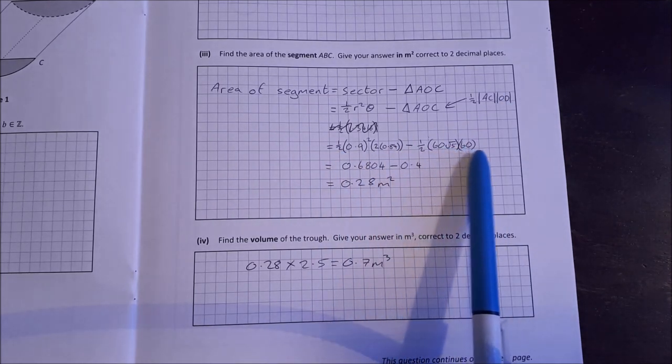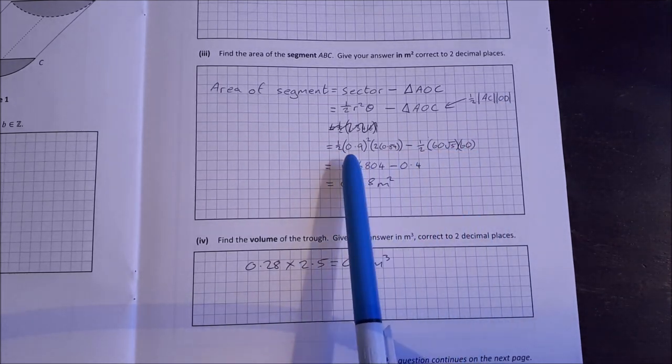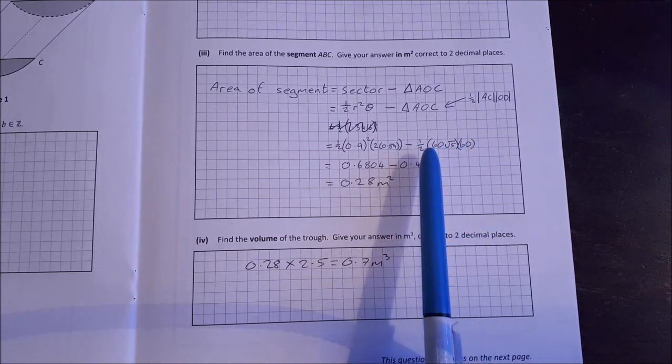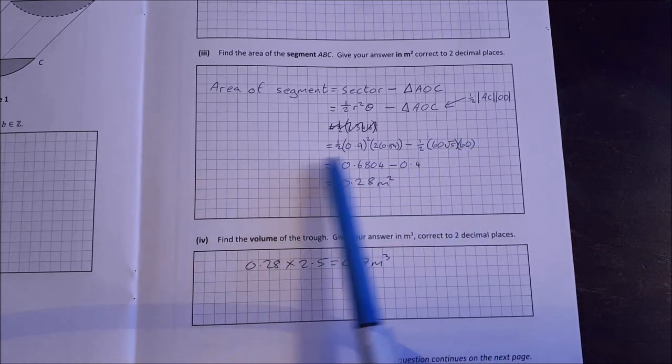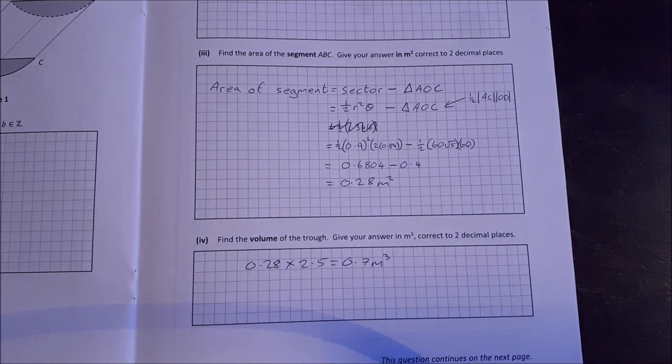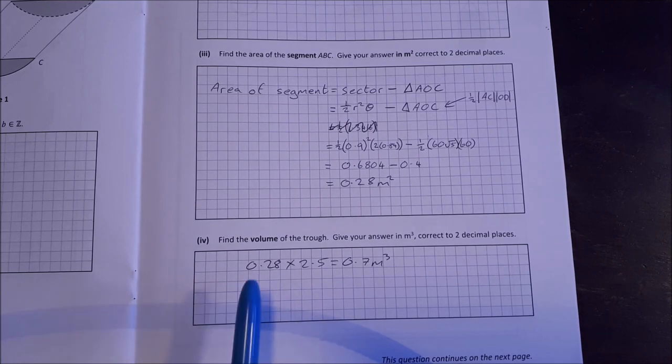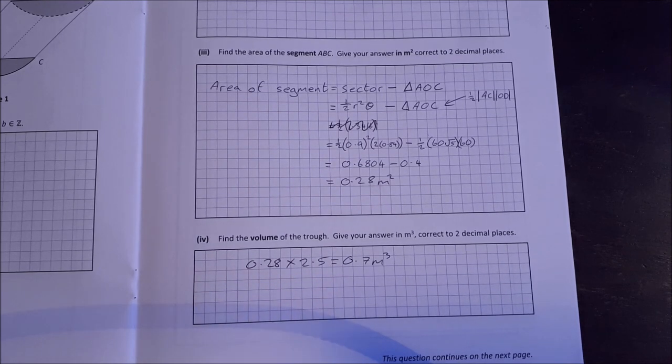So subbing in everything that we know, we know all the radius, the angle, we know AC, we know OD, sub it all in, you end up with 0.28 square meters. Find the volume of the trough then. Answer in meters cubed. So the volume is just going to be 0.28 by the length 2.5 to get 0.7 cubic meters.